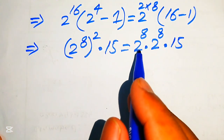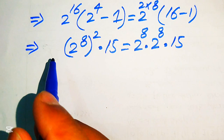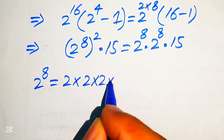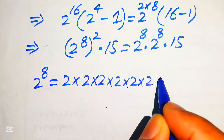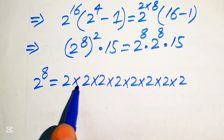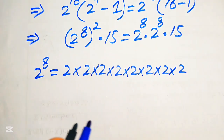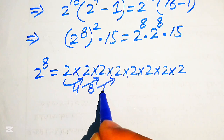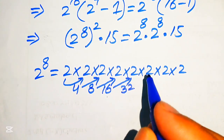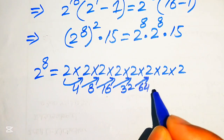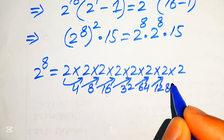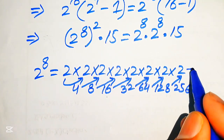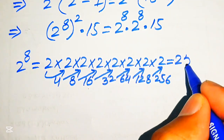Our target now is to find the value of 2 to the power of 8. We multiply 2 by itself 8 times: 2 times 2 is 4, 4 times 2 is 8, 8 times 2 is 16, 16 times 2 is 32, 32 times 2 is 64, 64 times 2 is 128, 128 times 2 is 256. So 2 to the power of 8 equals 256.